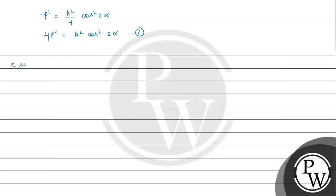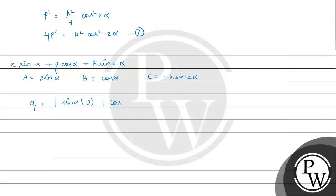We have another equation: X sin alpha plus Y cos alpha equals K sin 2 alpha. From here we can write A equals sin alpha, B equals cos alpha, and C equals minus K sin 2 alpha. The length of perpendicular from the origin to this line is Q. So Q equals modulus of sin alpha into 0 plus cos alpha into 0 minus K sin 2 alpha, divided by root of sin square alpha plus cos square alpha.